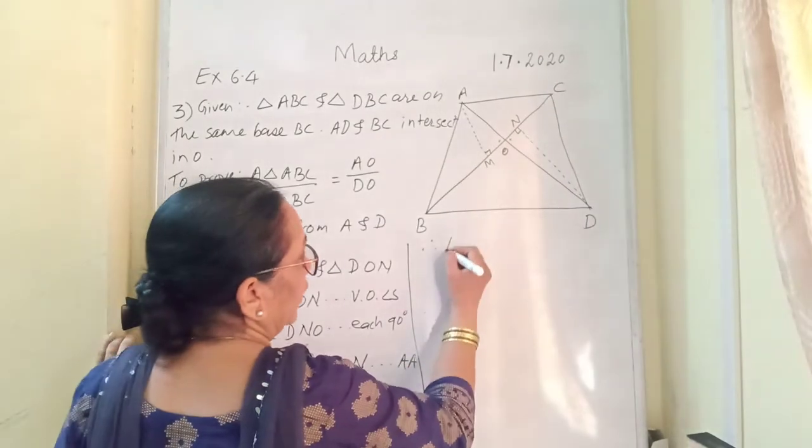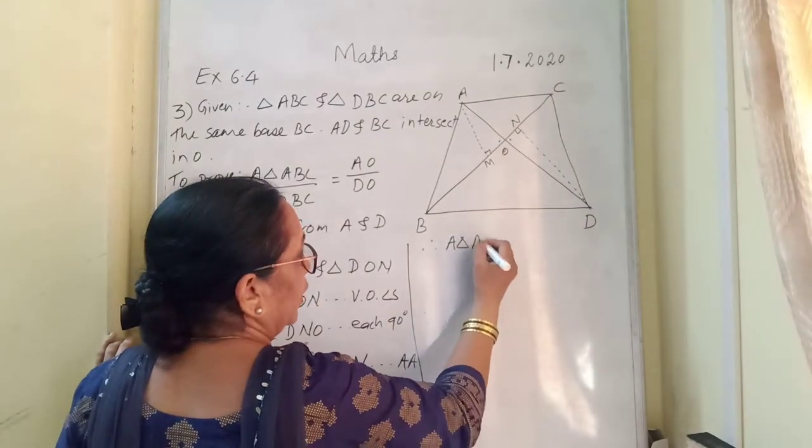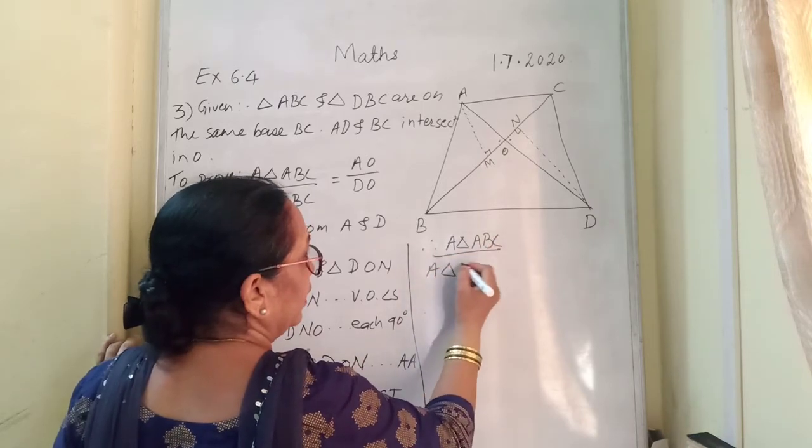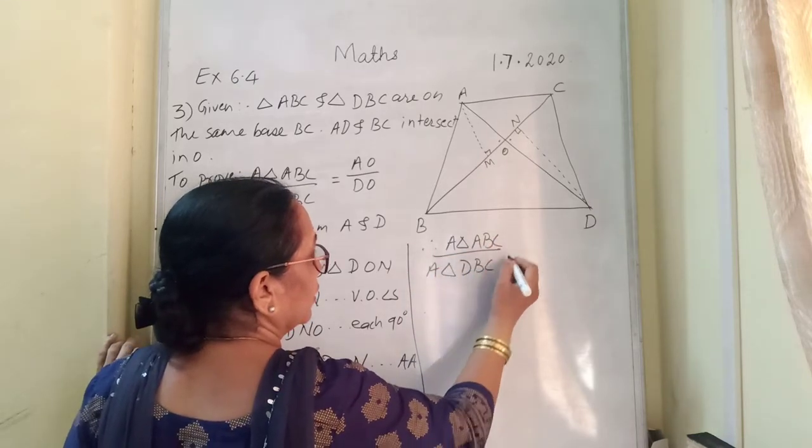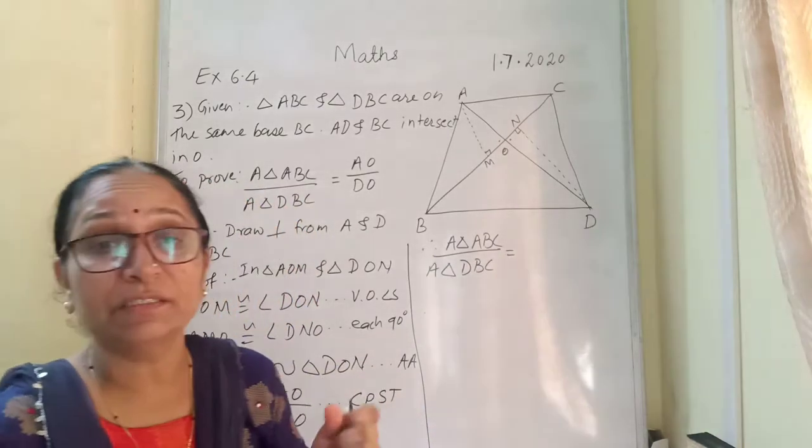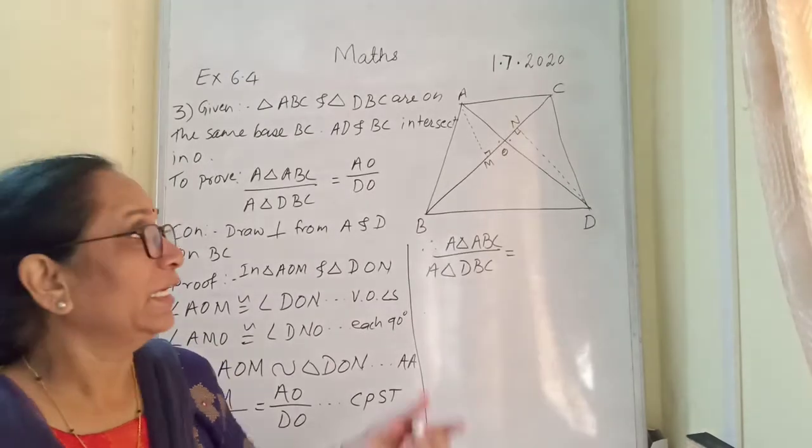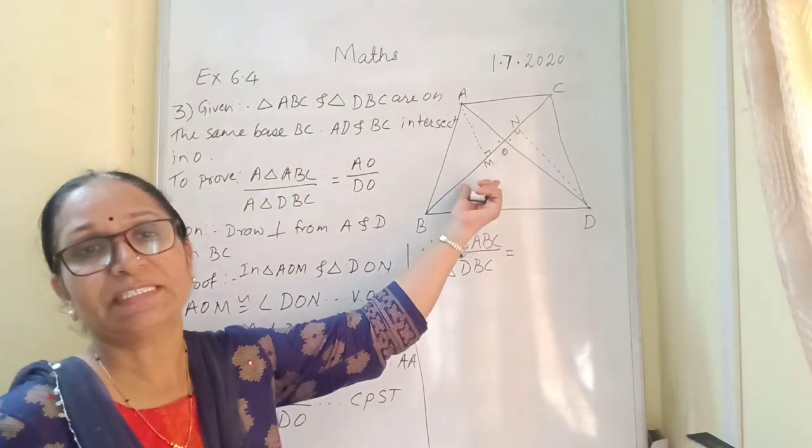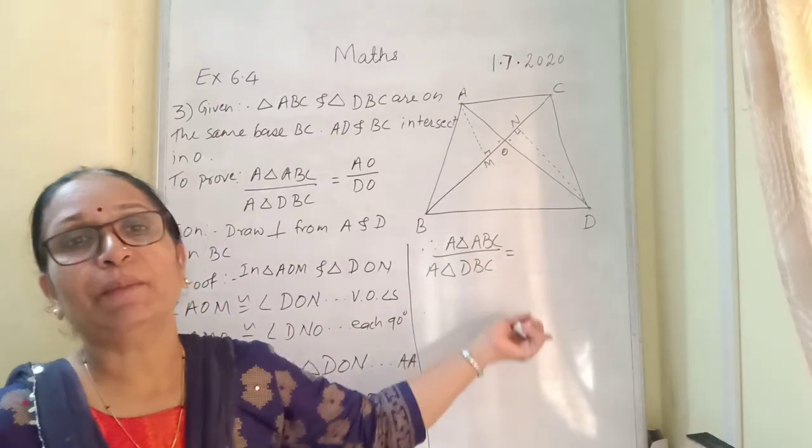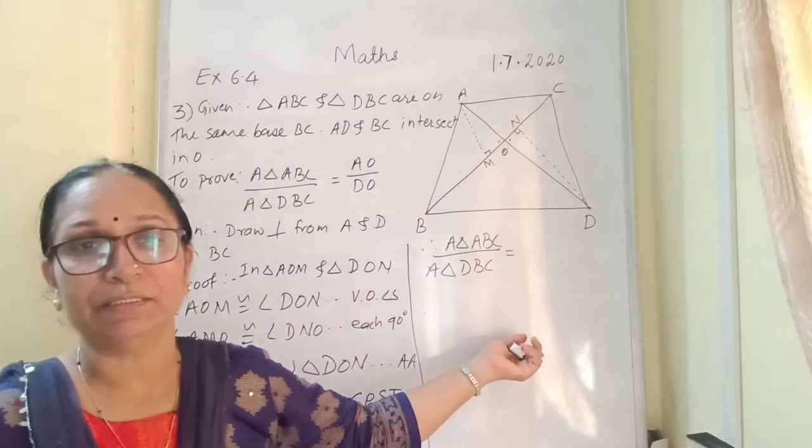Now therefore area triangle ABC upon area triangle DBC is equal to, now children we have seen in the previous theorem that if B1 is equal to B2, bases are same, then A1 upon A2 will be equal to H1 upon H2. That we have learnt. Correct?